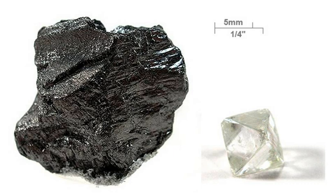For example, graphite is opaque and black while diamond is highly transparent. Graphite is soft enough to form a streak on paper, hence its name, from the Greek verb graphene, which means "to write," while diamond is the hardest naturally occurring material known.